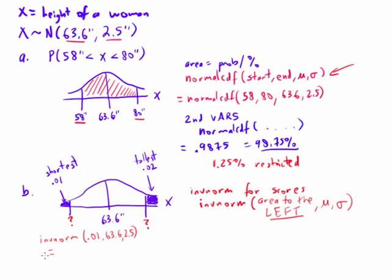So go to second vars on your calculator again. This time choose inverse norm, and do 0.01, 63.6, 2.5. And you get about 57.8 inches if you round it.